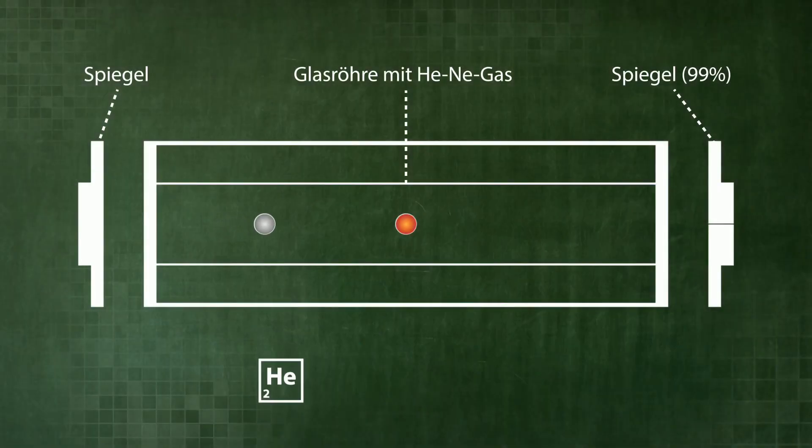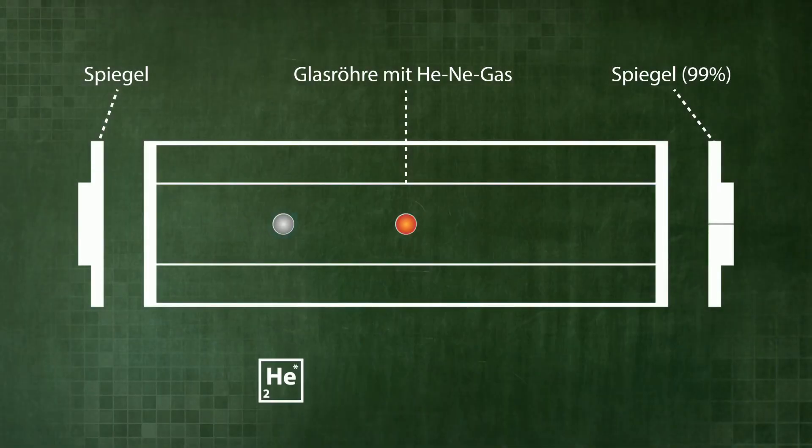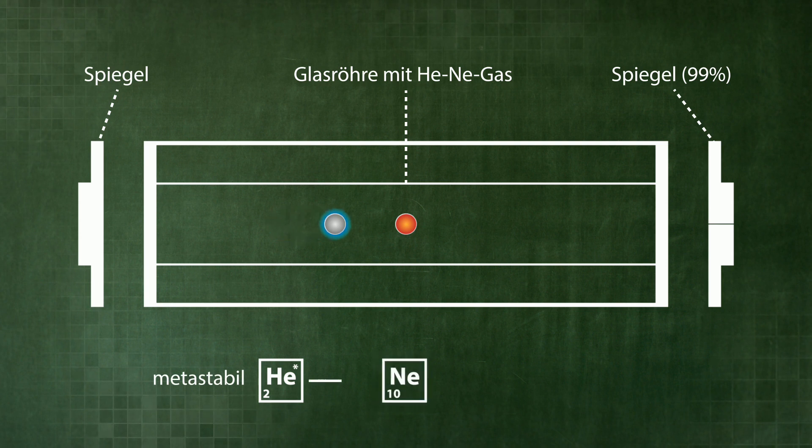Helium atoms are excited by shockwaves created by electric discharge. The interesting feature here is that helium cannot give off energy by emitting radiation. It needs collisions to do so. This is because helium atoms are metastable. When a helium atom collides with a neon atom, it gives its energy off. The neon atom, in turn, can immediately emit a photon to its surroundings. It then returns to its ground state.